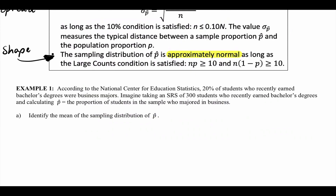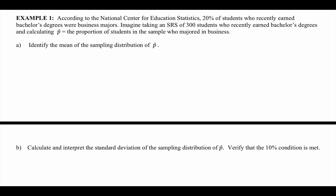Let's look at example number one. According to the National Center for Education Statistics, 20% of students who recently earned a bachelor's degree were business majors. Imagine taking an SRS of 300 students who recently earned a bachelor's degree and calculating P-hat — P-hat would be the proportion of students in the sample who majored in business.